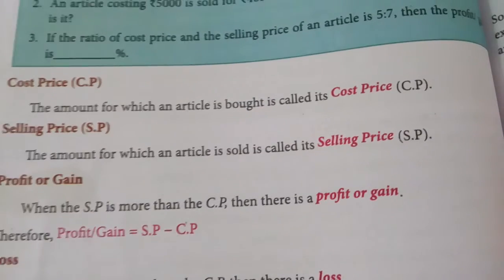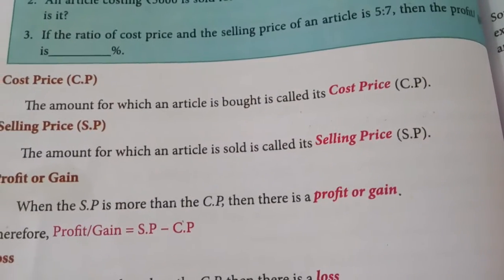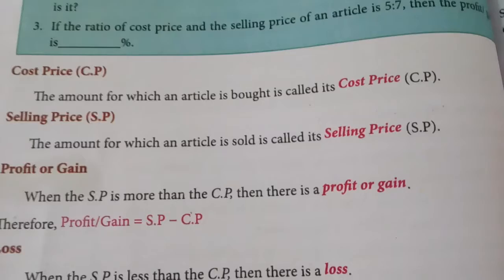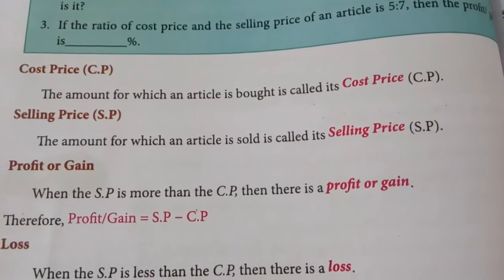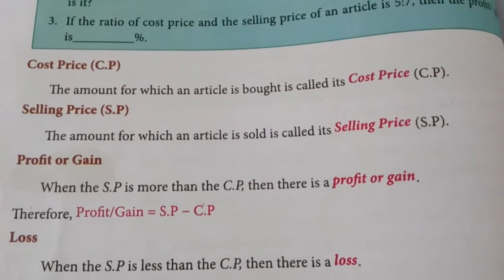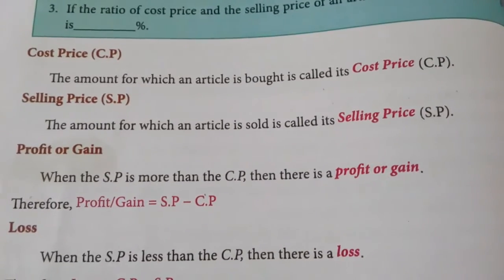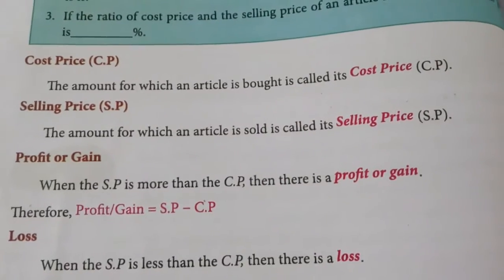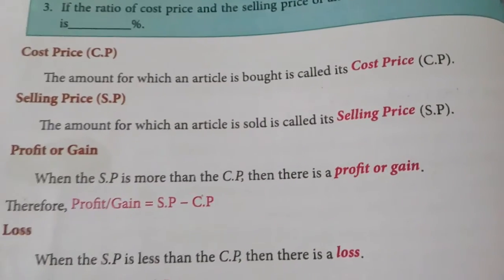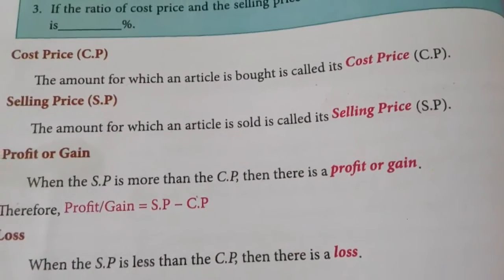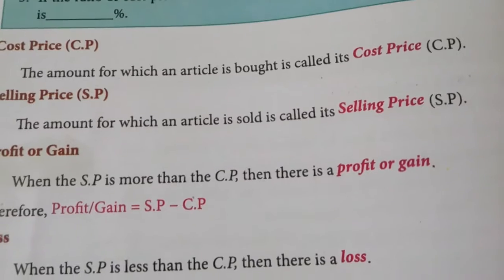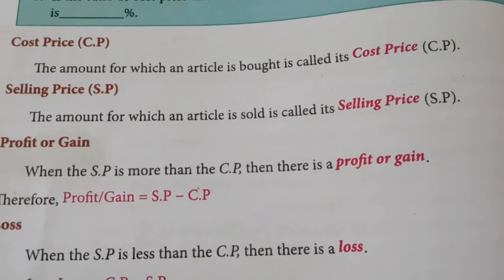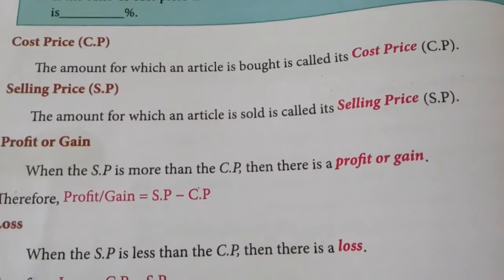The amount for which an article is bought is the cost price. So if I am going to purchase a TV, that is my cost price — the amount with which I purchased any object is called the cost price. Selling price: the amount for which an article is sold is called the selling price.